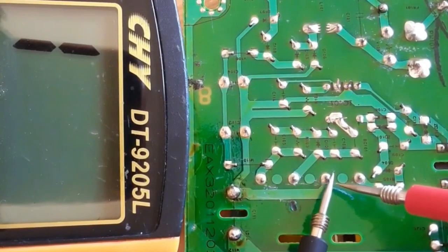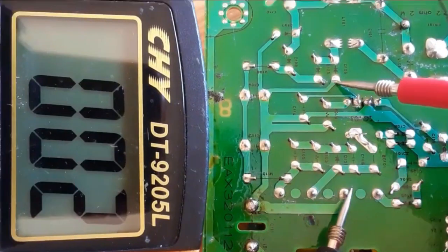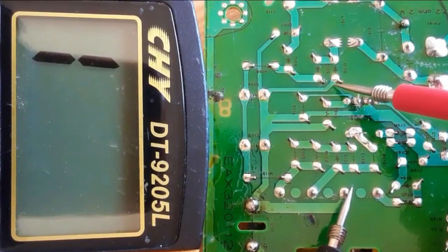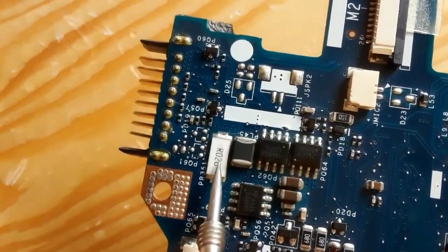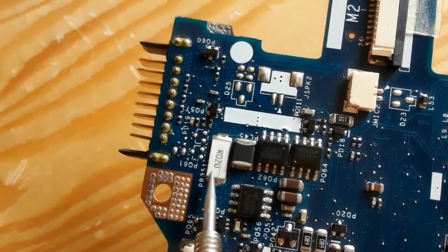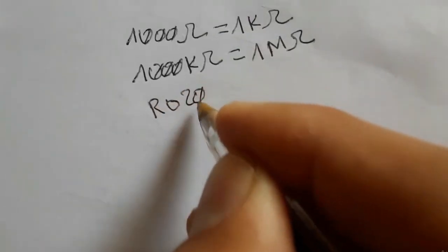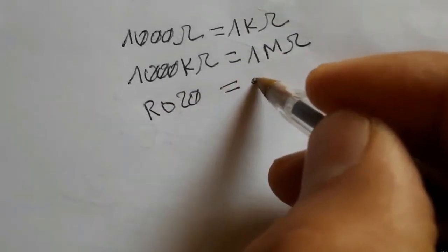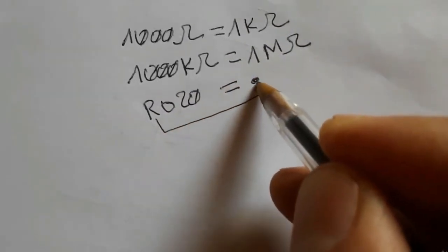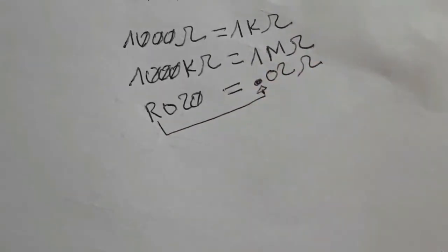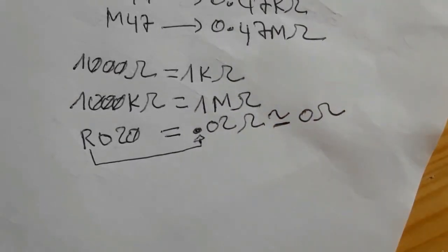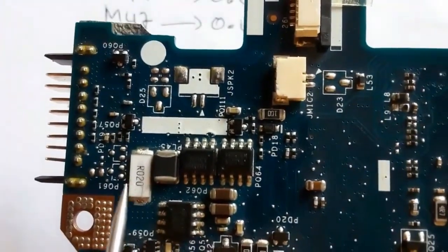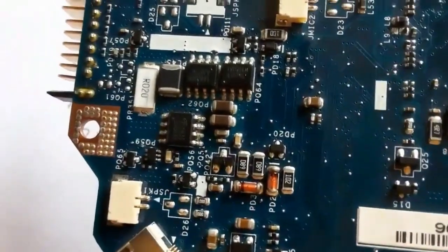Let's check from this point to this point — we have zero ohm in the multimeter, which means these points are connected together. Because the two points exist in the same path, we're going to see a current sense resistor. Here we have R020, which means 0.02 ohms. It reads approximately zero ohm, so it's like a fuse. This is a current sense resistor.